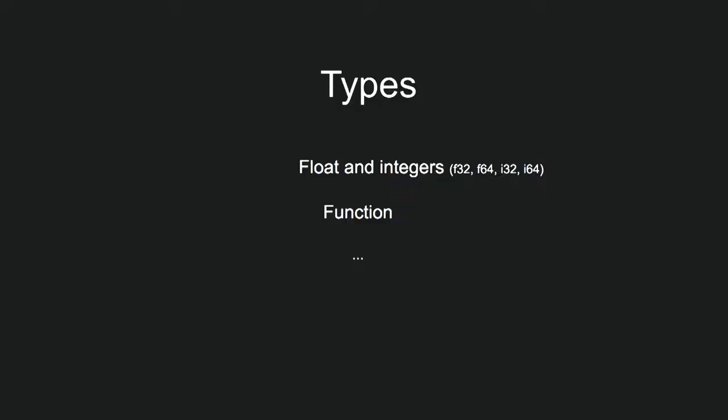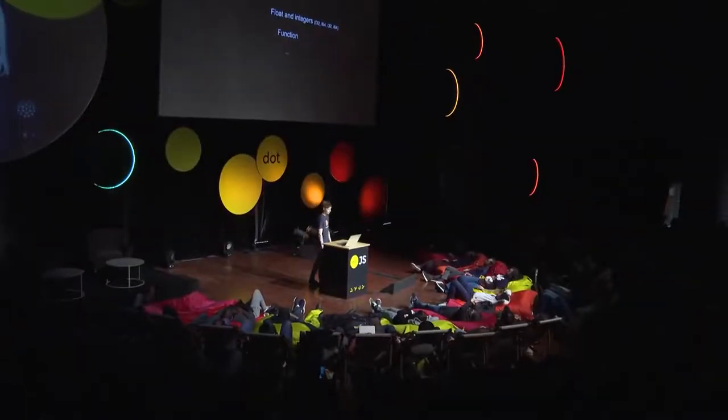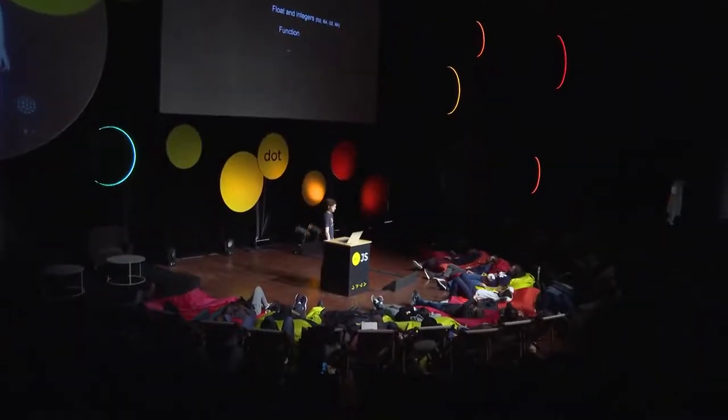Let's talk a bit about types. WebAssembly has four primitive types: floats and ints, both in 32-bit and 64-bit. You also have memory and table, but that's not relevant here. Any language that compiles to WebAssembly can make use of these types to build richer types, like an object or a string.